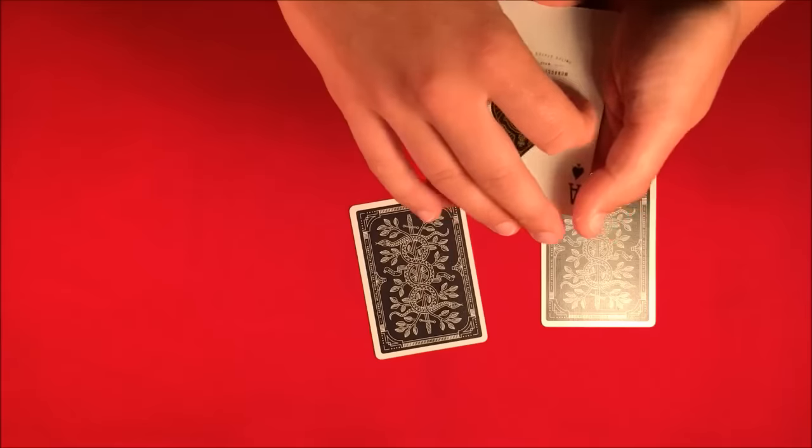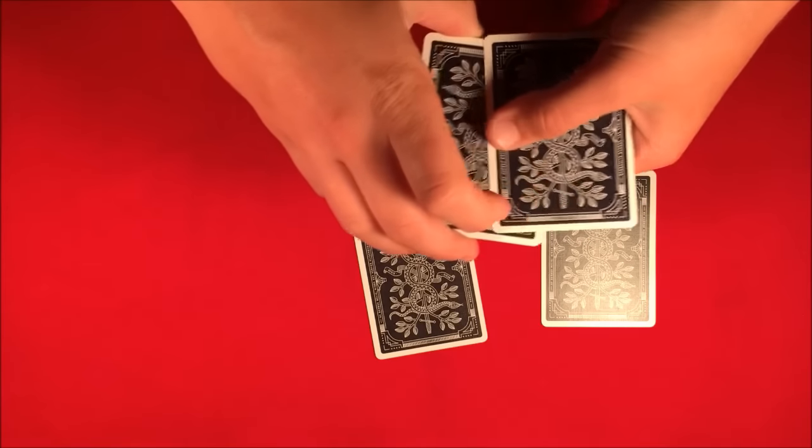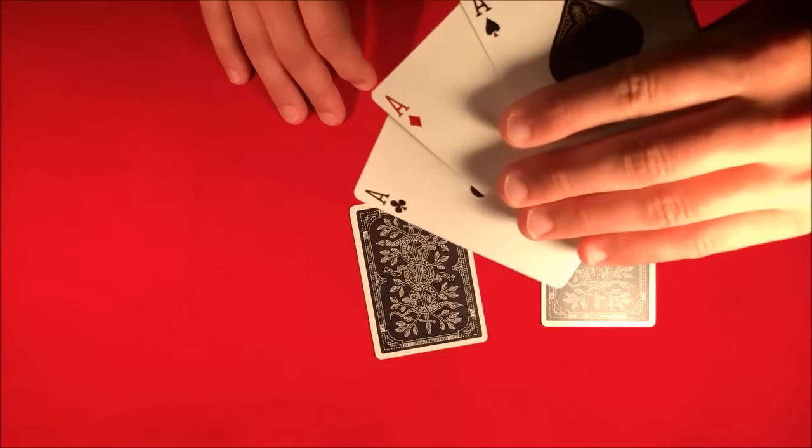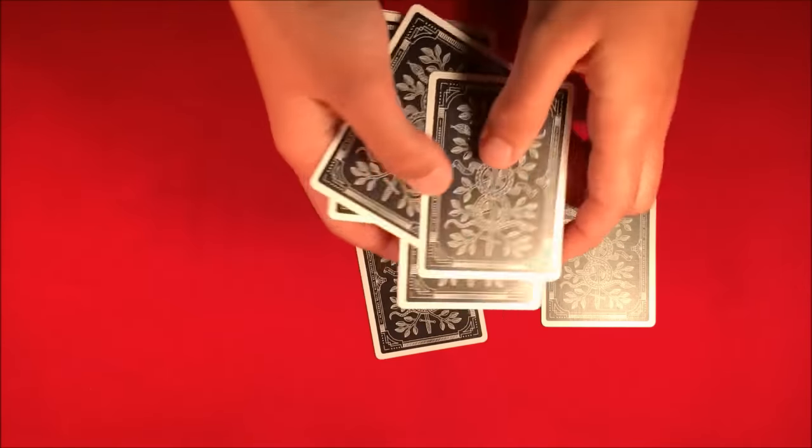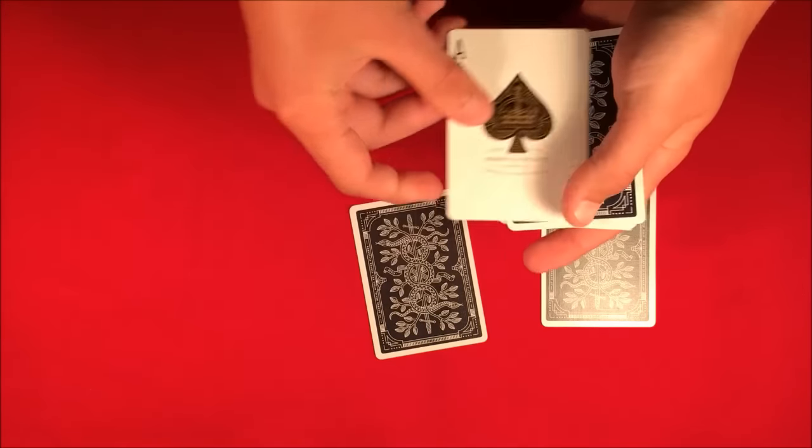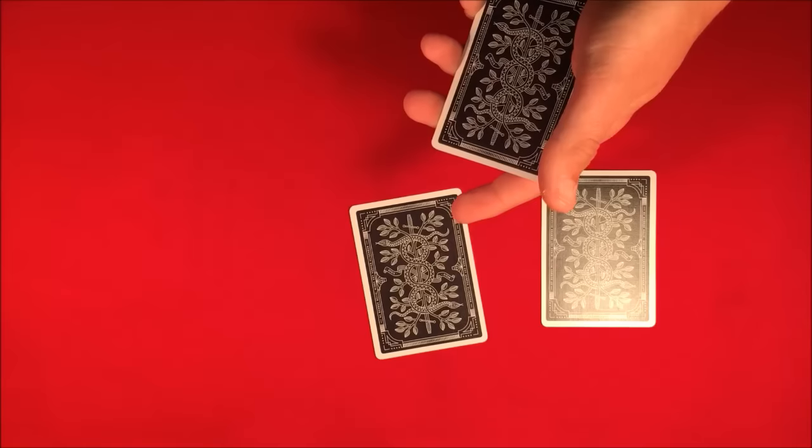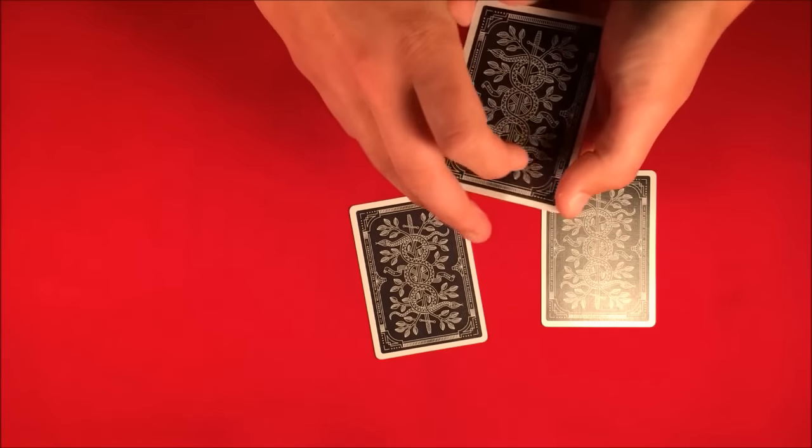And I'll show you here again, we have the three aces, the four aces, just like this. You can see those. And now again, here's the ace of spades you chose at the beginning. I'll take that, I'll set that off to the side, and now what I want to do is show you again.